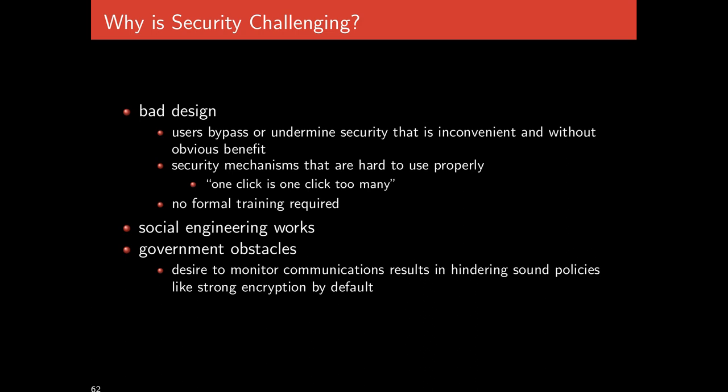Social engineering works — calling someone up and getting them to reveal their password by pretending to be someone they'd trust. Social engineering is an extremely common form of attack and doesn't involve any programming expertise whatsoever, just the confidence to lie to someone and get information. Security is also challenged by government obstacles — governments have wanted to monitor communications since the beginnings of the internet, making strong encryption by default politically reticent, and stapling security on after the fact more challenging.